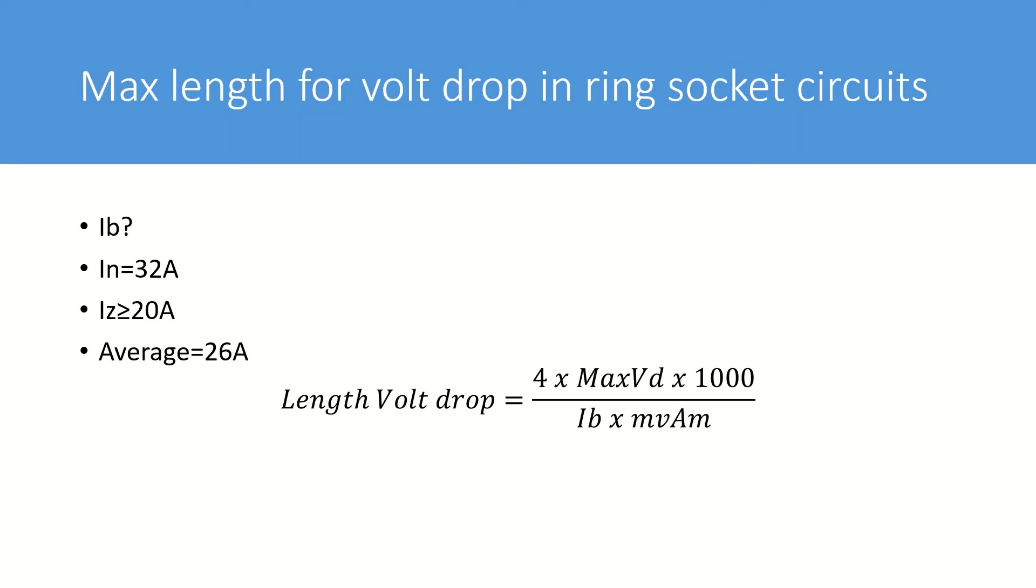The second difference is that because the circuit is wired in a ring when we are measuring to the farthest point of the circuit it's necessary to add a multiplier of four to the equation to allow for the loop of the circuit.